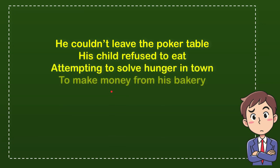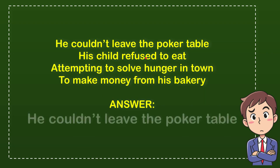The third option is attempting to solve hunger in town, and the last option is to make money from his bakery. The correct answer for the question is he couldn't leave the poker table. That's the answer for the question.